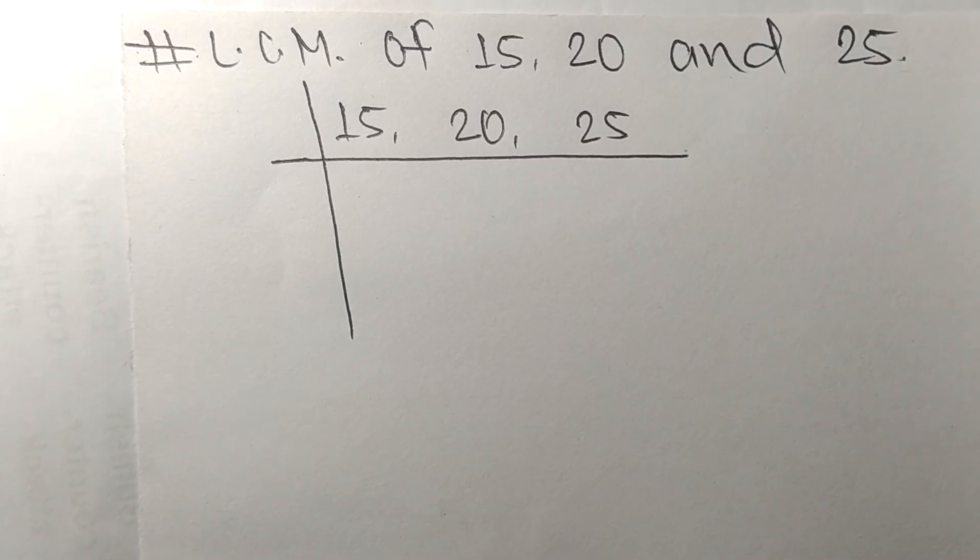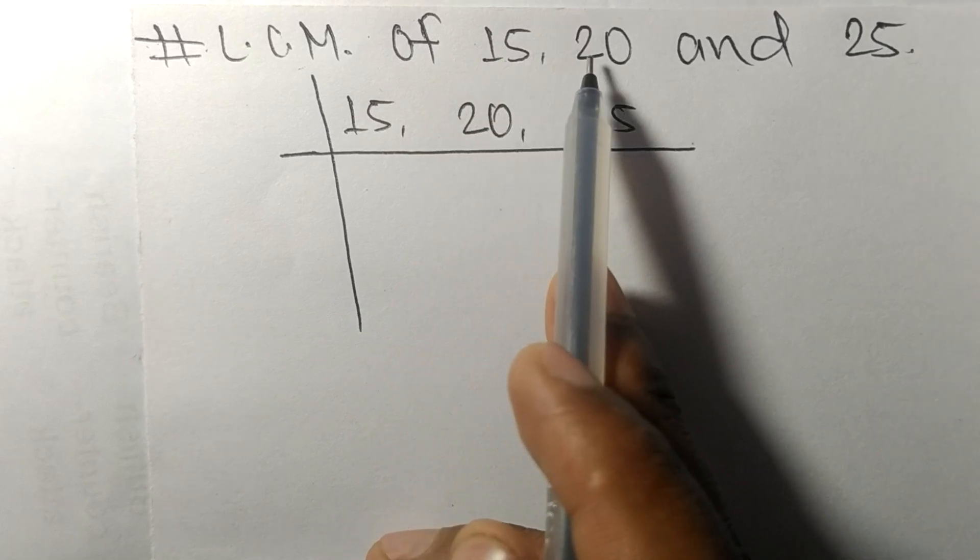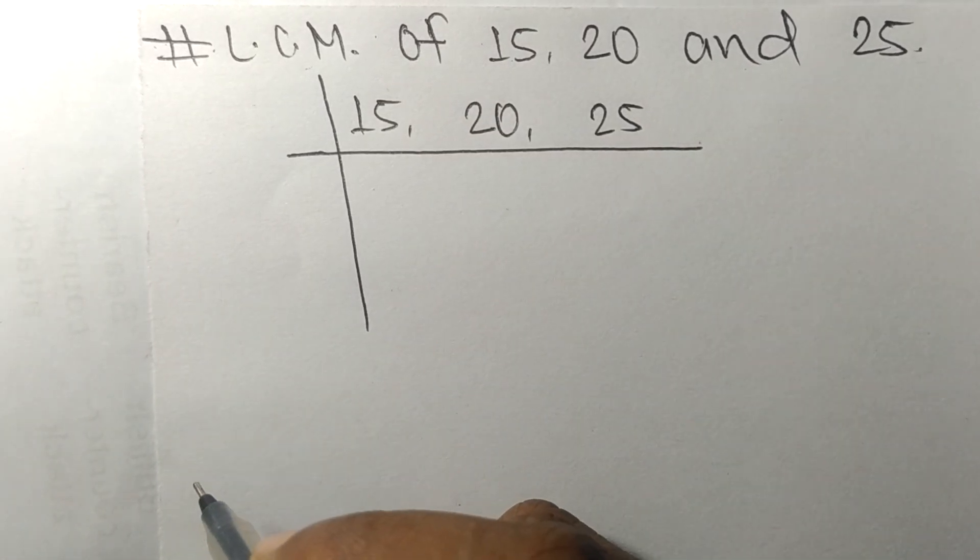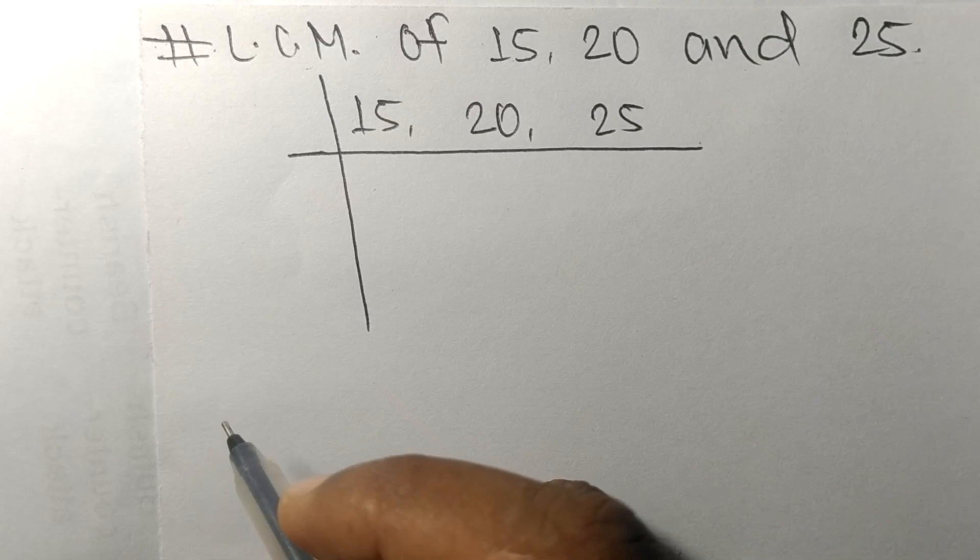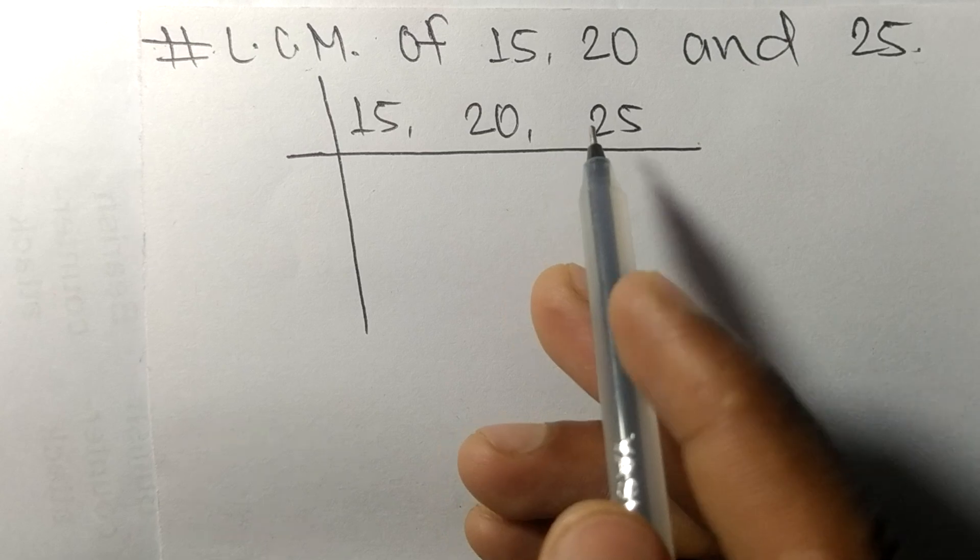So today in this video we shall learn to find the LCM of 15, 20, and 25. So to find LCM we have to choose the lowest number that can exactly divide at least any two of these numbers.